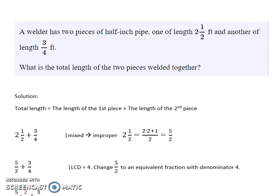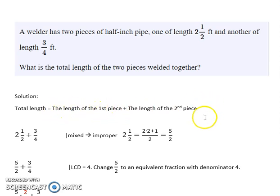A welder has two pieces of half-inch pipe, one of length two and a half feet and another of length three-fourths feet. What is the total length of the two pieces welded together? To find the total length, we have to add the length of the first piece to the length of the second piece.